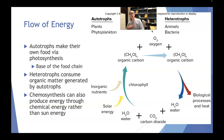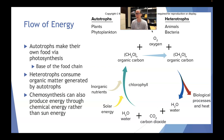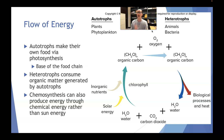Heterotrophs consume organic matter generated by autotrophs, so in some way, shape, or form, you are eating a plant. Even if you hate vegetables, whatever meat product you're eating has at one point eaten a plant. Cows eat grass or grain, pigs eat almost anything, chickens peck at whatever they want, and whatever fish you're eating started by eating some sort of plankton material. We'll learn later how incredibly inefficient the flow of energy is across trophic levels — it's wildly inefficient.